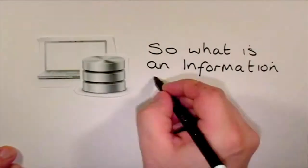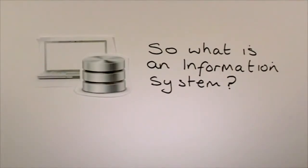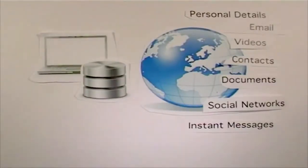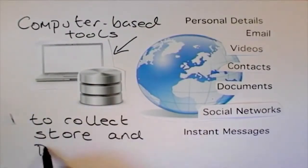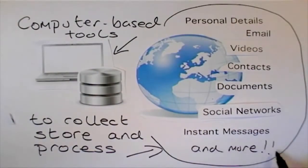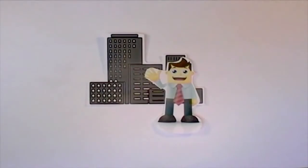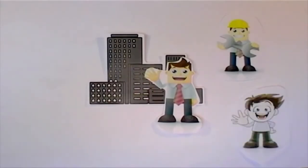So what is an information system? An information system is a set of computer-based tools for collecting, storing, and processing data. In our world, businesses and other organizations rely on information systems to carry out and manage their operations, interact with their customers and suppliers, and compete in the marketplace.